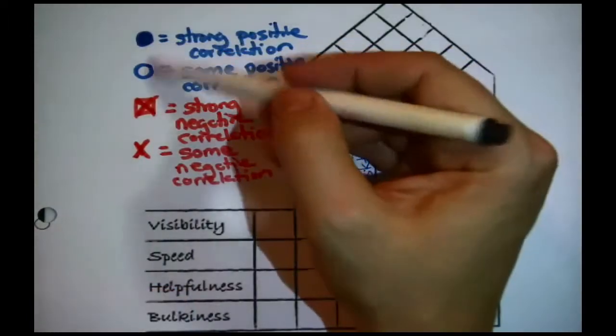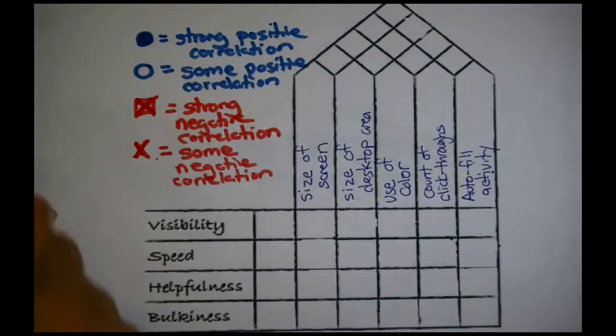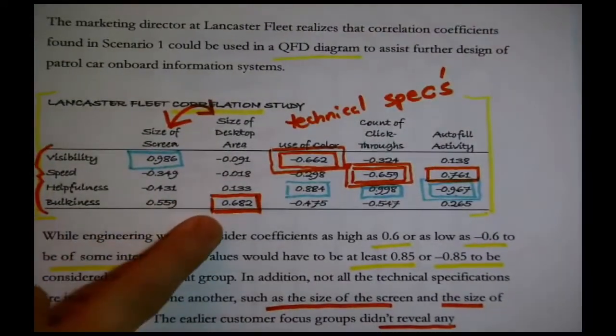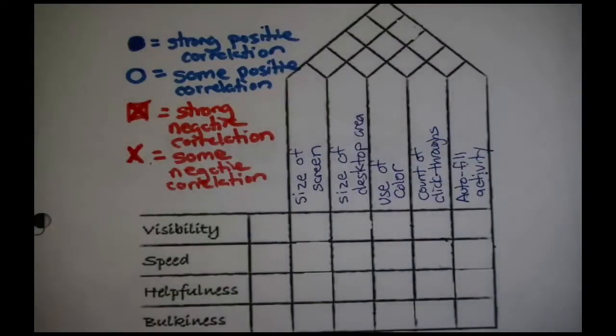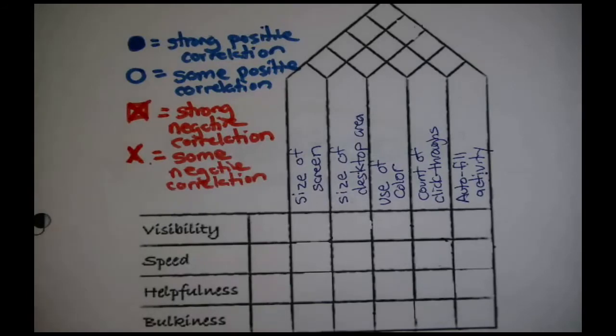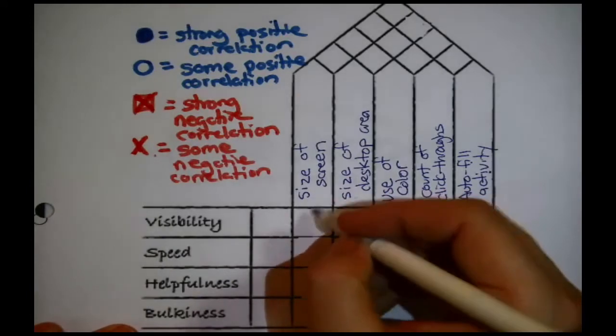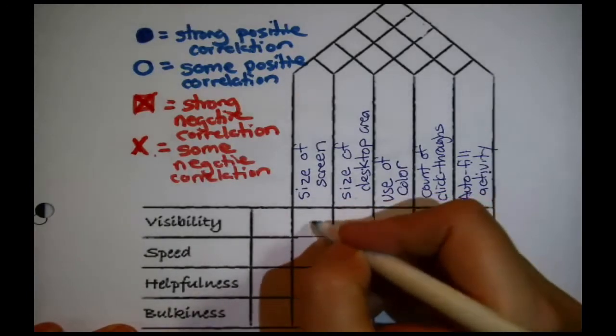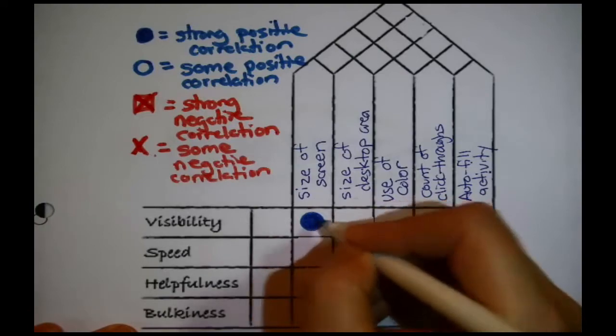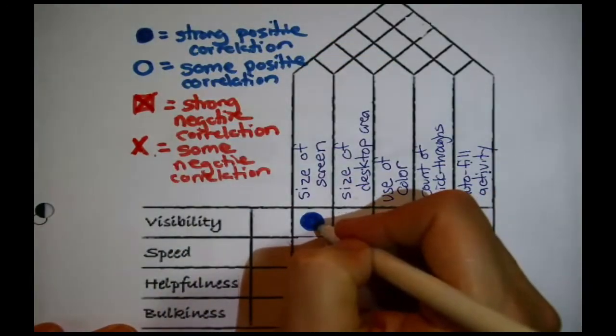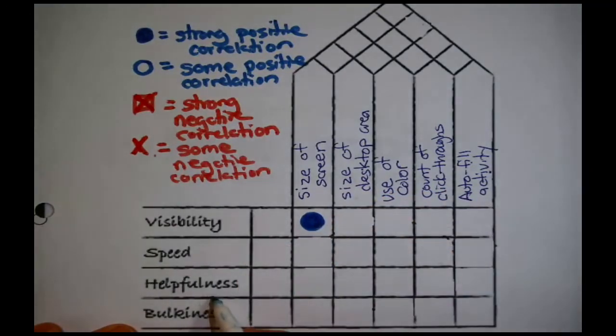Okay, now, I have my legend, my symbols. What am I supposed to do with that? I'm just going to translate this. Because, for instance, we were remarking that the correlation between visibility, this top row, and the size of the screen, I'm reading it from the original data, it's 0.986. That is definitely what we would call strong, so I just put my symbol for that. And then likewise, helpfulness down here and use of color. Okay, that's this column right here. The original correlation is 0.884. That qualifies also as strong positive, so I put a dot.